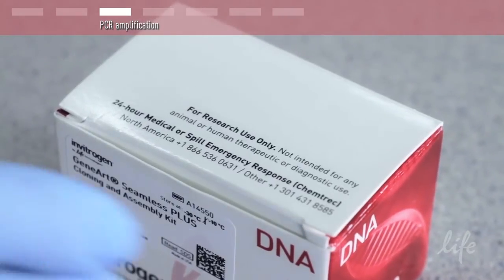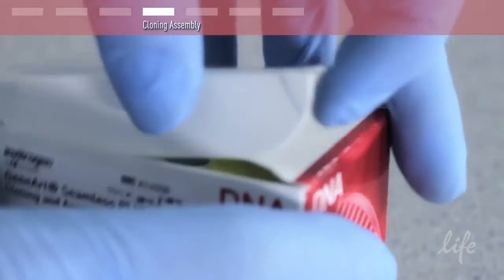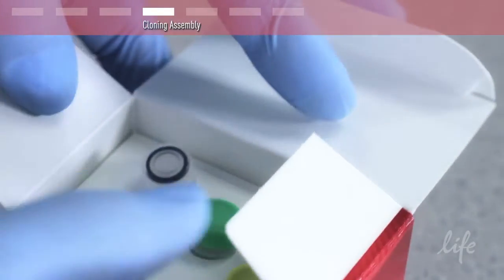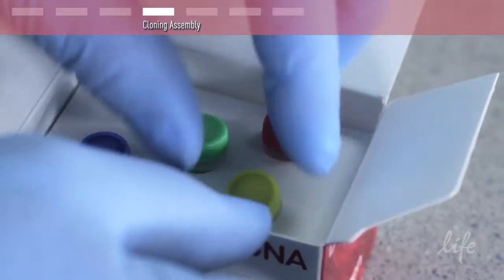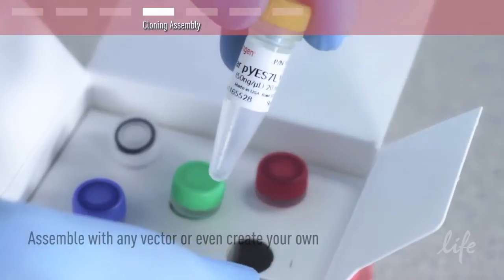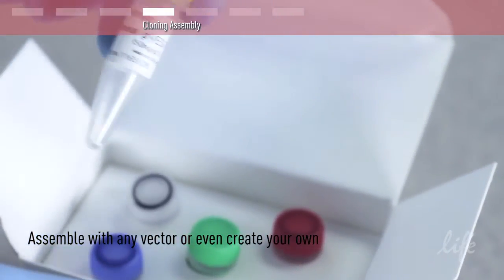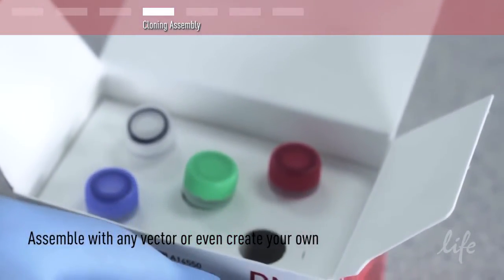Now you're ready to use the GeneArt Seamless Plus cloning and assembly kit. Depending on the size of your construct, take the appropriate linear vector from the kit. This kit does however allow assembly of any vector or creation of your own.